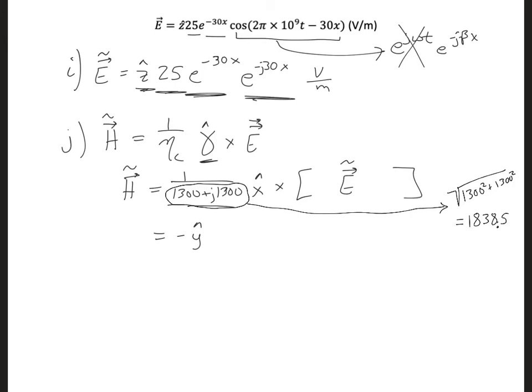And you could find the angle. Since these are equal, the angle you would get is 45 degrees. So now it's a matter of doing 25 divided by 1838.5 for the amplitude, which we get 0.0136. And we'll have to still account for this 45 degree phase. So we'll do that in just a minute. So for the amplitude, we also have e to the minus 30x.